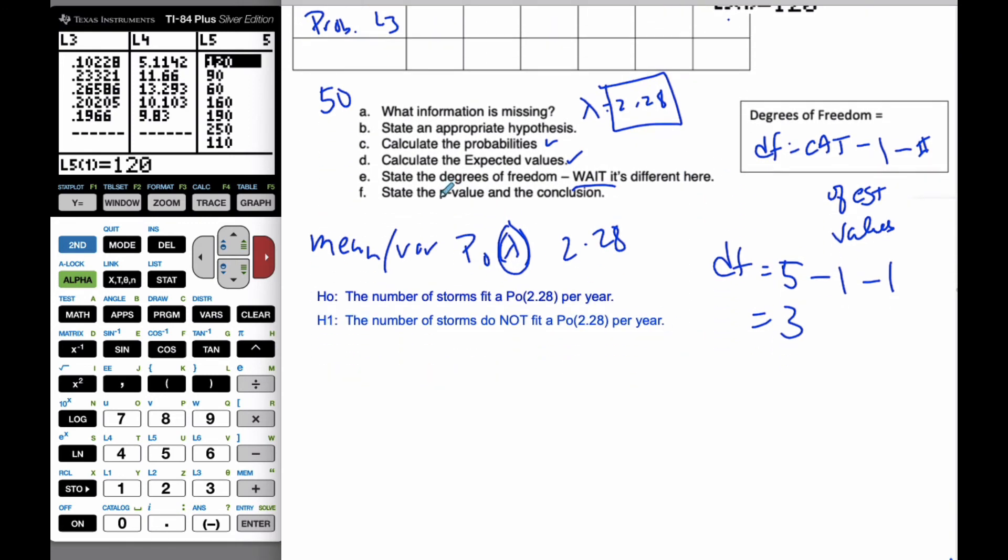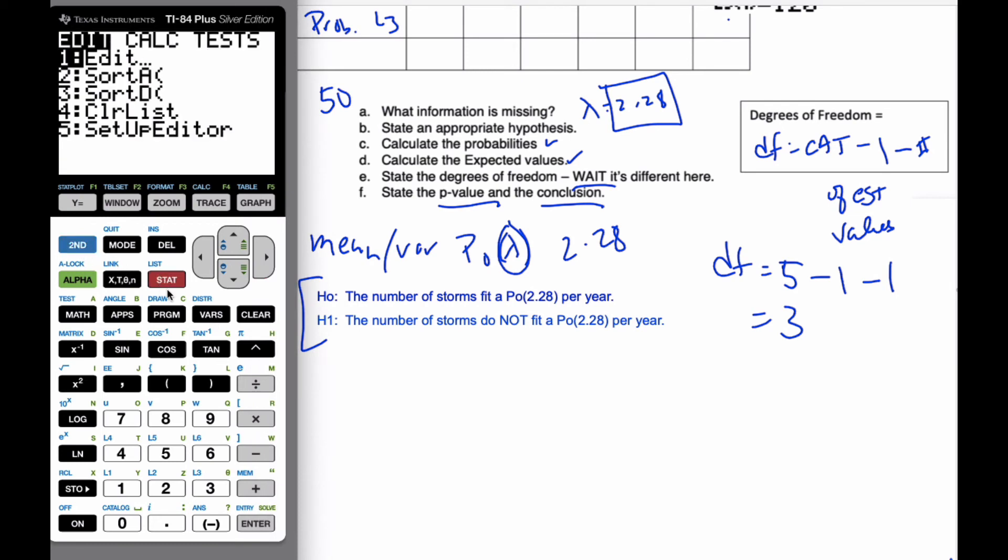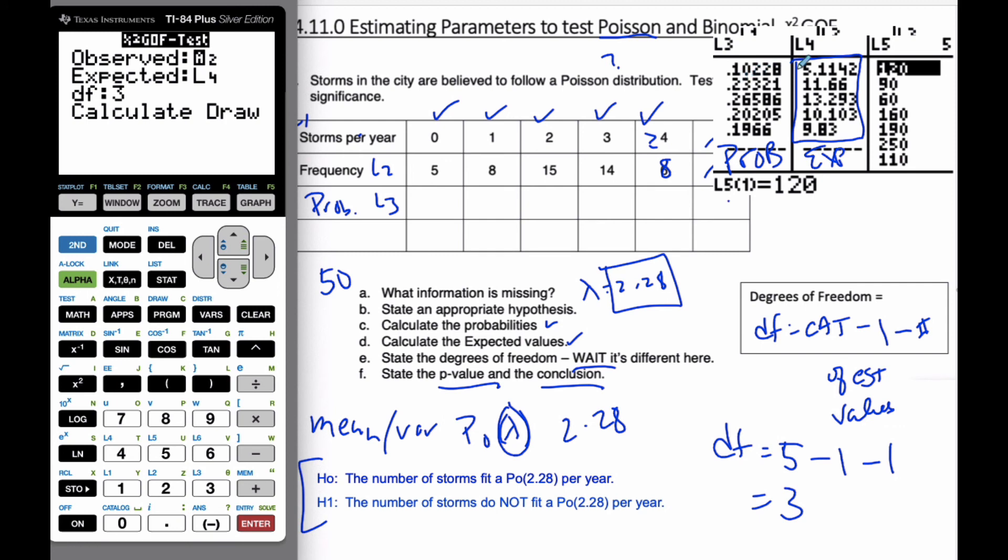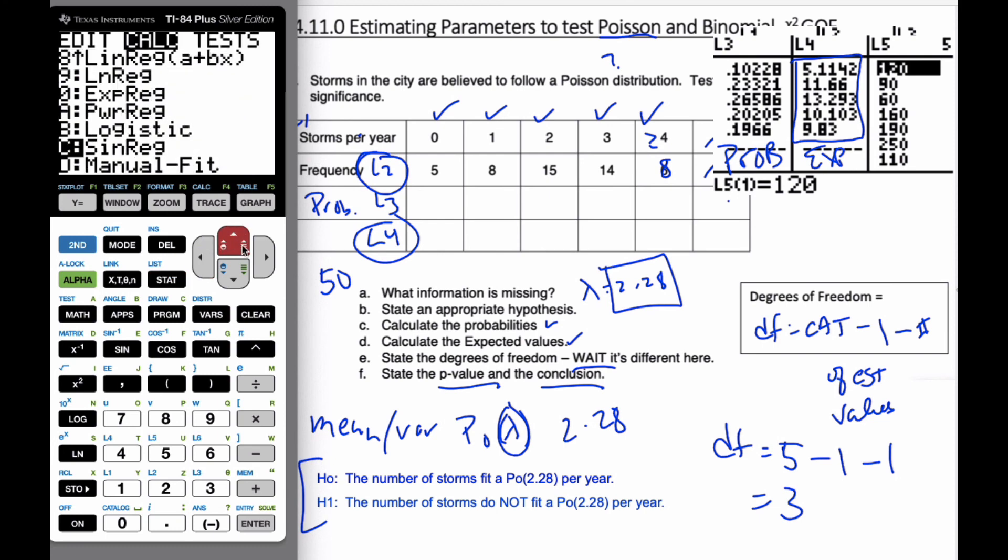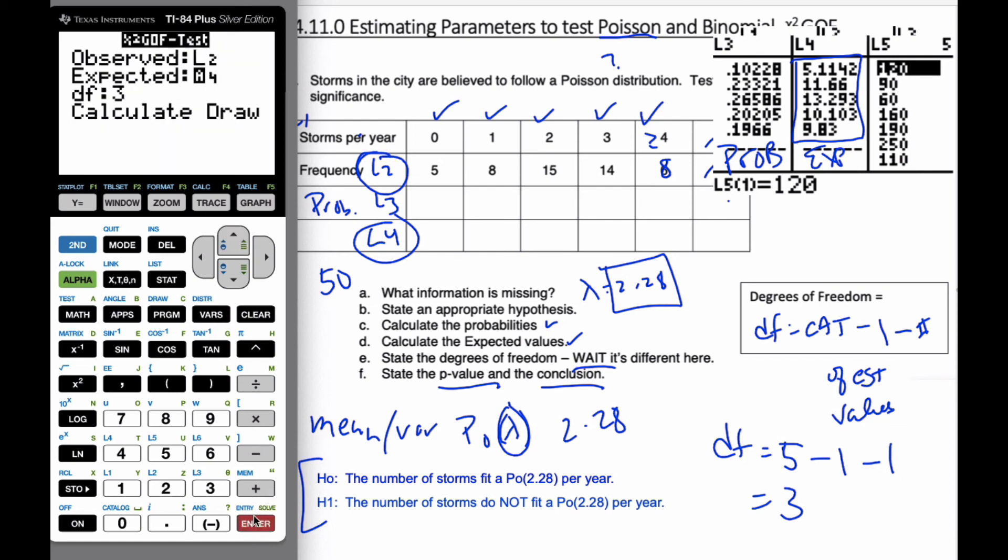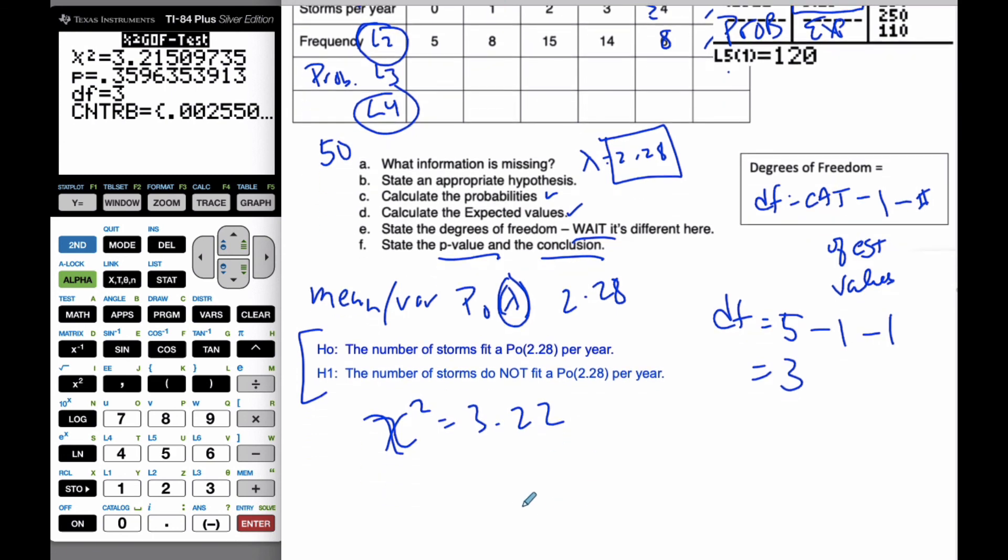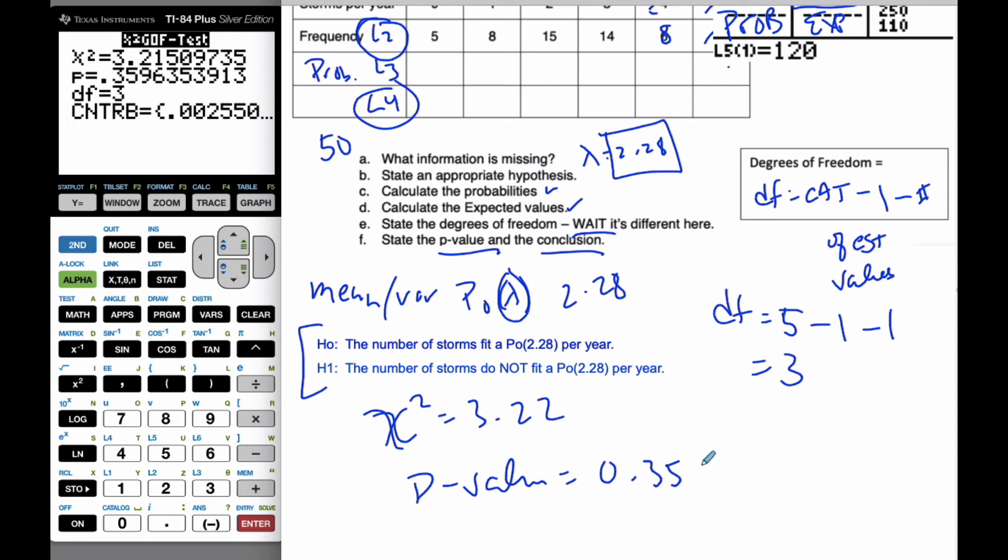And so now, finally, I'm going to state the p-value and my conclusion. Using my chi-square goodness of fit, I have this null hypothesis. And so if I go to my goodness of fit, I'm going to go to my tests for goodness of fit. I know my observed. My observed was in L2, because this was my frequency, L2. And my expected is in L4, which is as I have. And my degrees of freedom is already 3. And I'm going to calculate it out. And so my chi-squared value is equal to 3.22. My p-value is equal to 0.360.